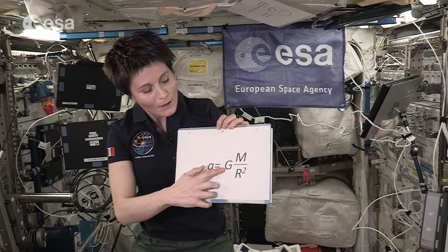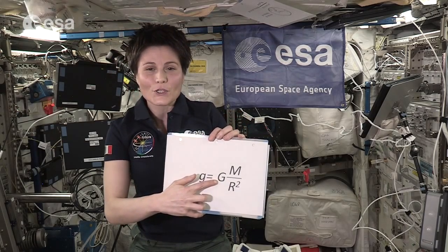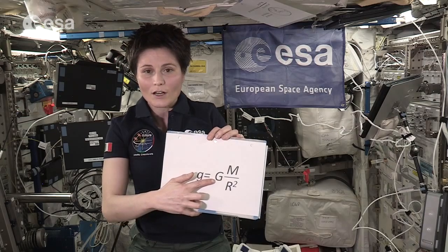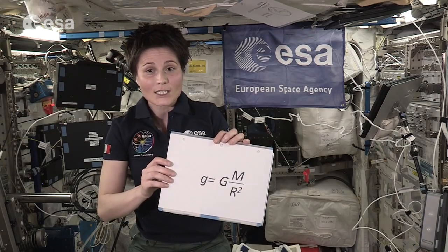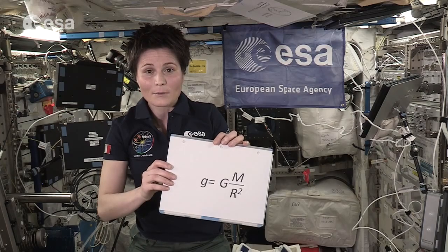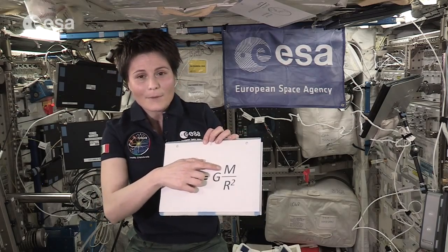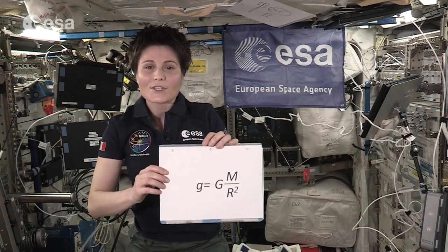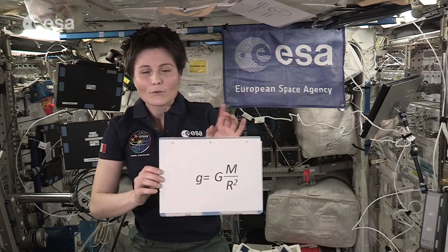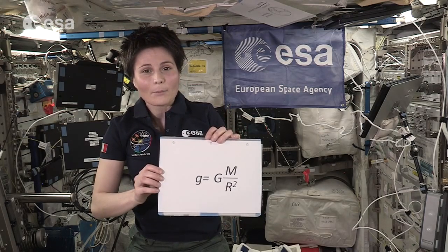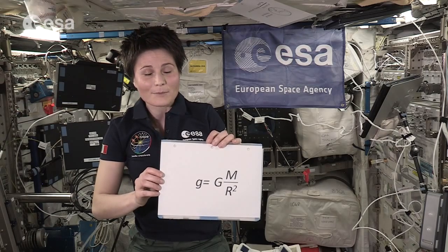We have big G. Big G is a constant, often referred to as Newton's constant, although actually it was determined 70 years after Isaac Newton's death by Harry Cavendish. Then we have big M. Big M is the mass of the Earth in kilograms, so that would be around six million million million million kilograms.